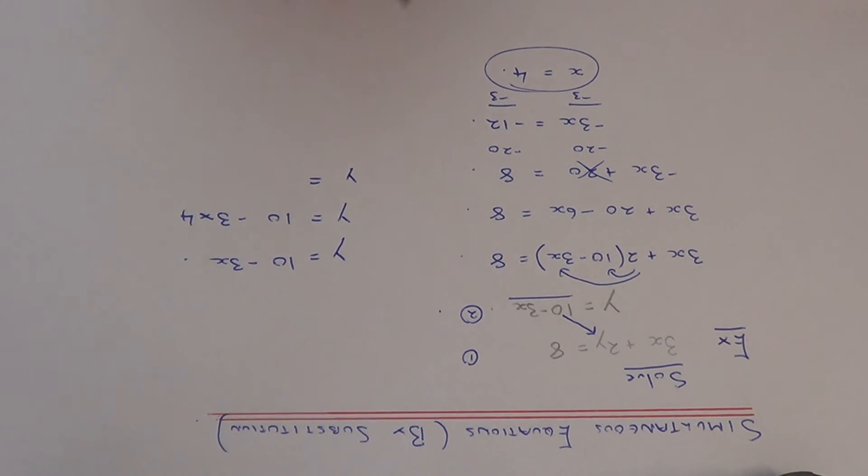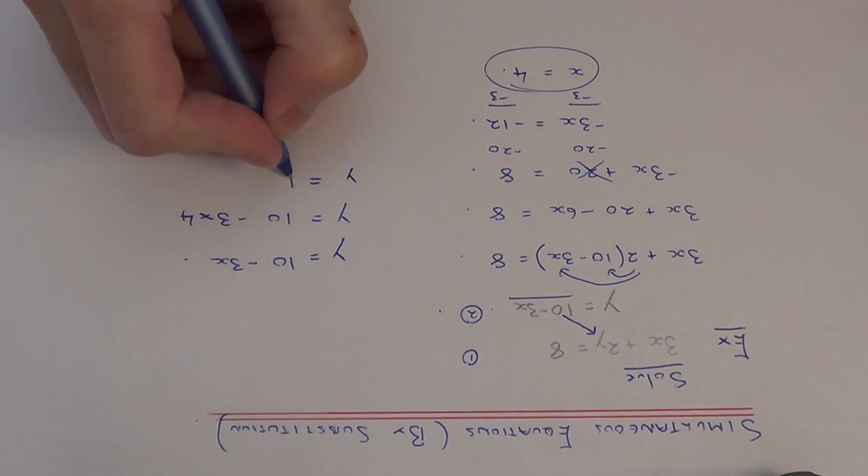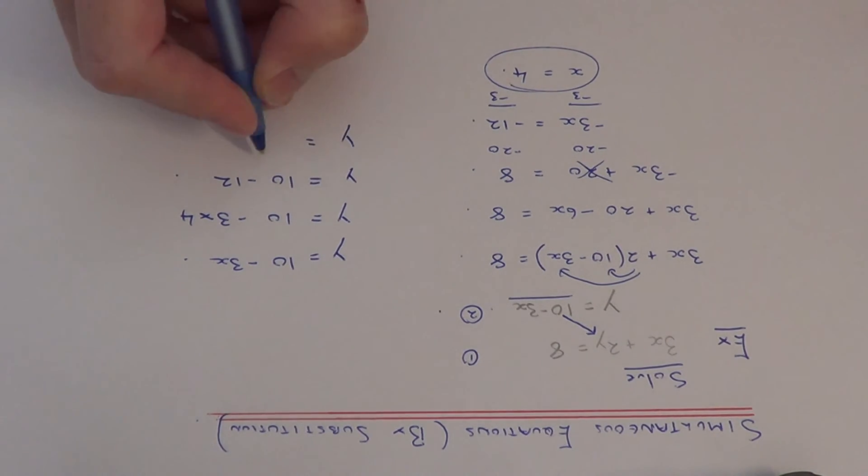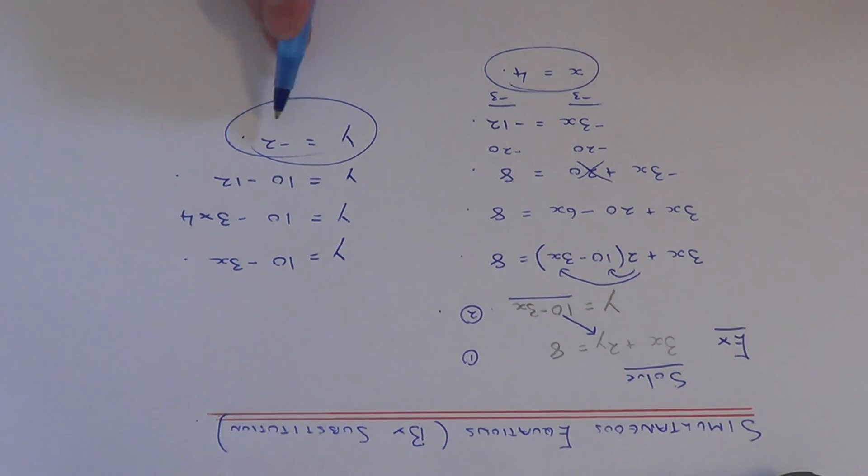So minus 3 times 4 is minus 12. So 10 take away 12 is minus 2. So there we have it then. So we've got x equals 4 and y equals minus 2.